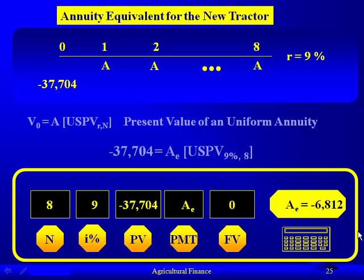How do you interpret that? It's the annualized cost that includes operating cost, capital recovery, and opportunity cost of your capital. It includes all of those for people in ag systems who are always trying to come up with that cost. This is a precisely calculated annualized cost for running that new tractor — including your capital cost, your depreciation, and your operating expenses.